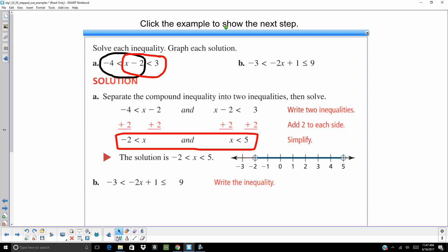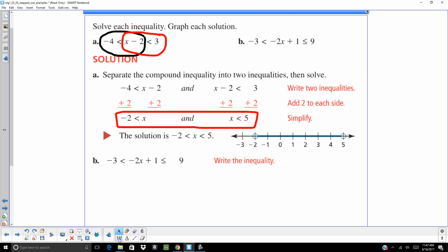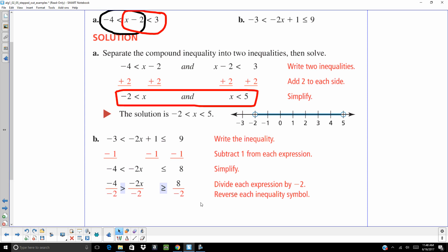On B, we're going to go ahead. We're going to separate that into two inequalities as well. Negative 3 is less than negative 2x plus 1. And it's less than... Did I say we were going to separate these into two inequalities? I just totally lied to you. We're going to keep it as 1. We're just going to show you another way to do it. We're going to subtract 1 from everything.